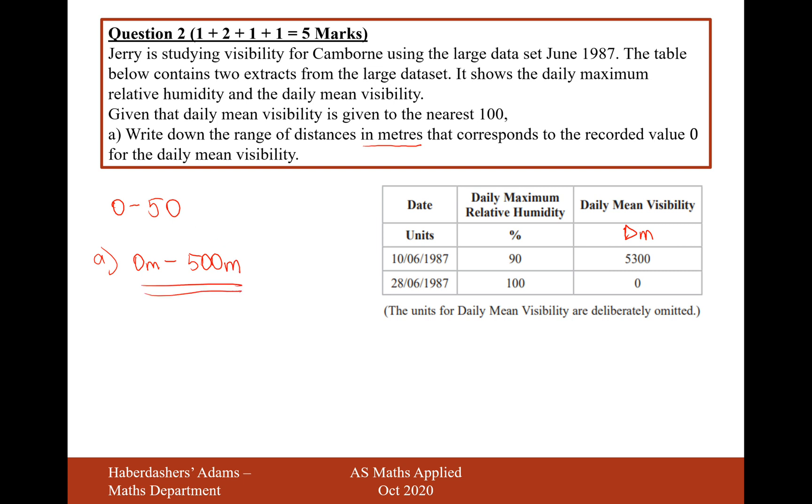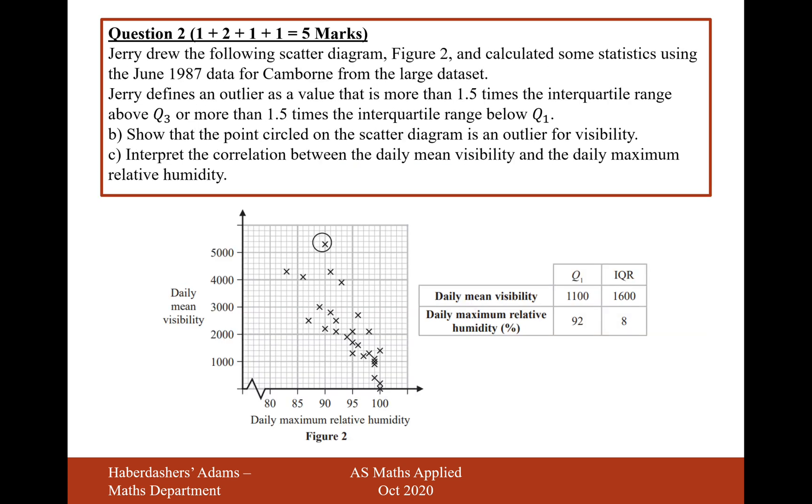So if our data value is from 0 to 50 in meters, that's going to be 0 to 500. So not a trick question exactly, but it's not the first most obvious answer. Let's move on to part B. Jerry drew the following scatter diagram in Figure 2 and calculated some statistics using the June 1987 data for Camborne from the large dataset. Jerry defines an outlier as a value that is more than 1.5 times the interquartile range above Q3, or more than 1.5 times the interquartile range below Q1. Part B is show that the point circled on the scatter diagram is an outlier for daily visibility.